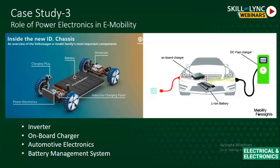This slide shows the structure of an electric vehicle powered by a battery. There is a drivetrain to drive the vehicle, a battery pack, and a charging plug. Power electronics is applied end-to-end in a hybrid electric vehicle. The Tartan X1 is one example of a pure electric vehicle currently on the market. Going in-depth into an electric vehicle: the four important topics where power electronics plays a role are the inverter, on-board charger, automotive electronics, and battery management system.